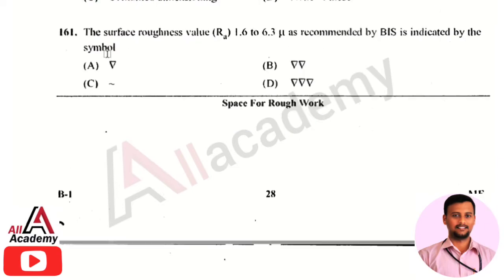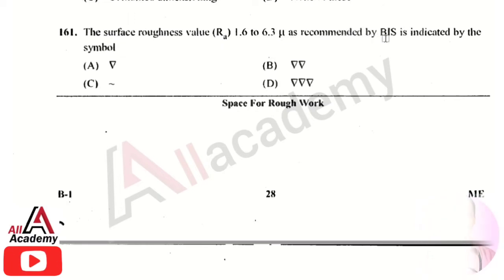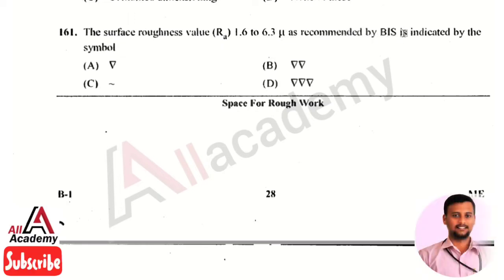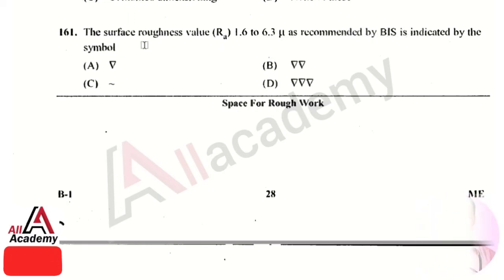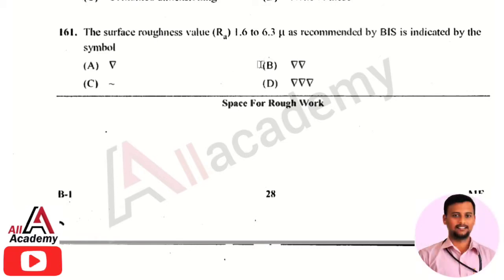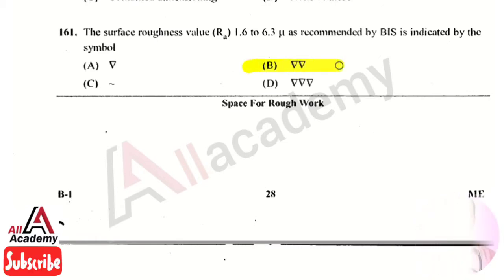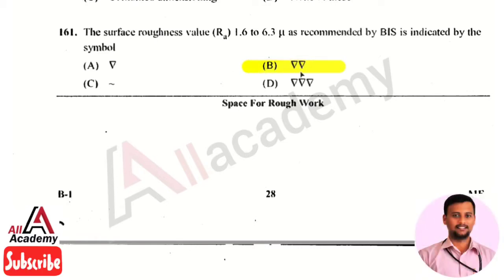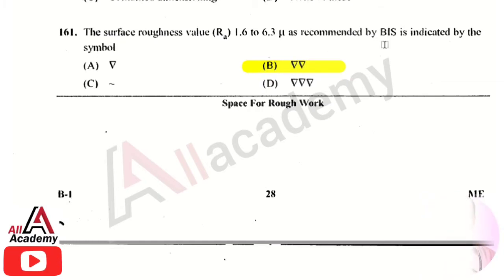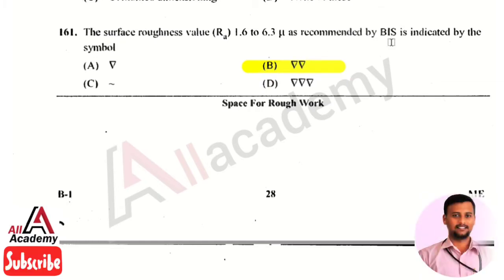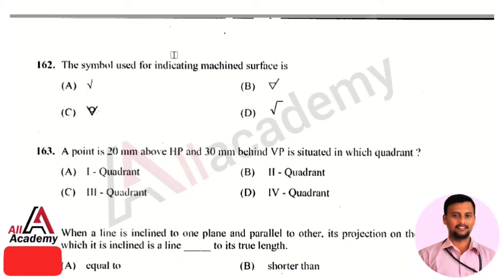The next question is: the surface roughness value of 1.6 to 6.3 microns recommended by BIS is indicated by which symbol? The right answer is option 2, that is two triangles pointing in a downward direction. This symbol is used as recommended by BIS to indicate the surface roughness.